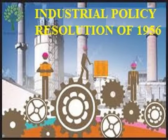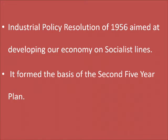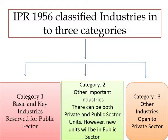Now we will discuss the Industrial Policy Resolution of 1956. It aimed at developing our economy on socialist lines and formed the basis of the second five-year plan. The resolution classified industries into three categories. Category one: basic and key industries, reserved for the public sector.